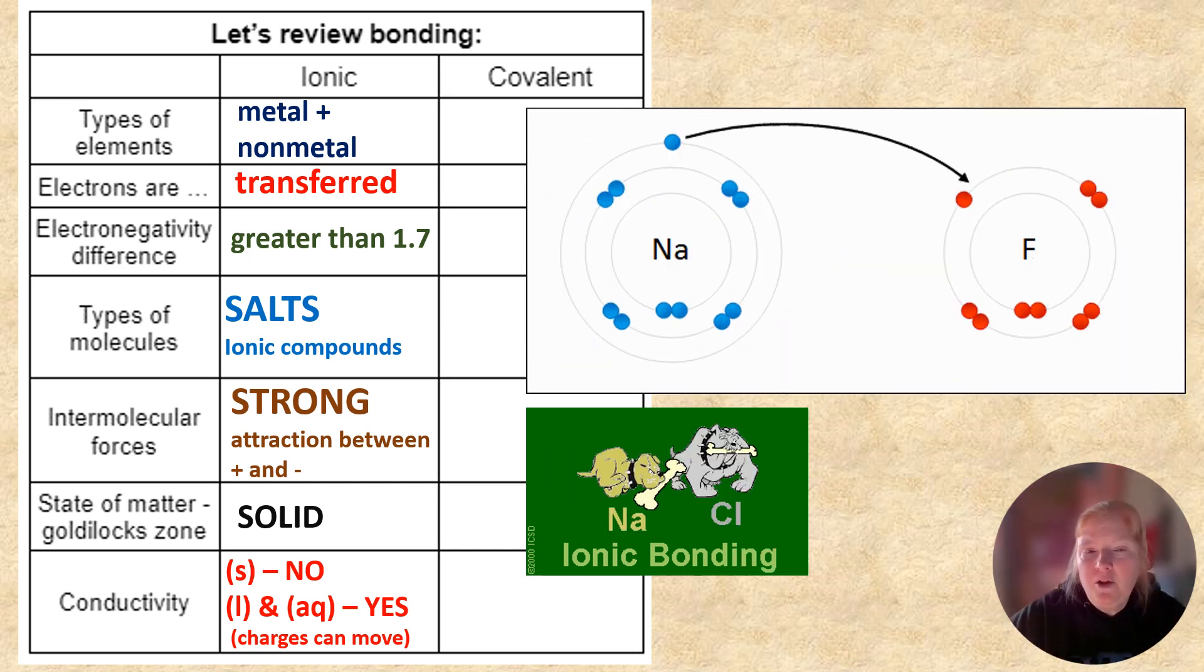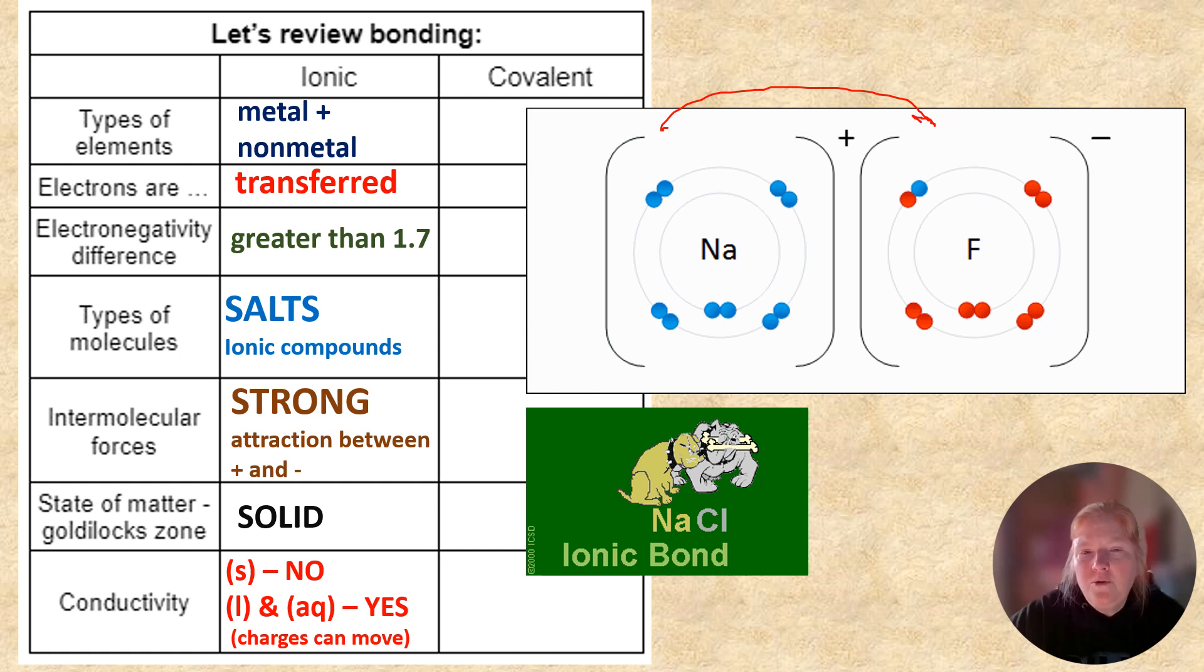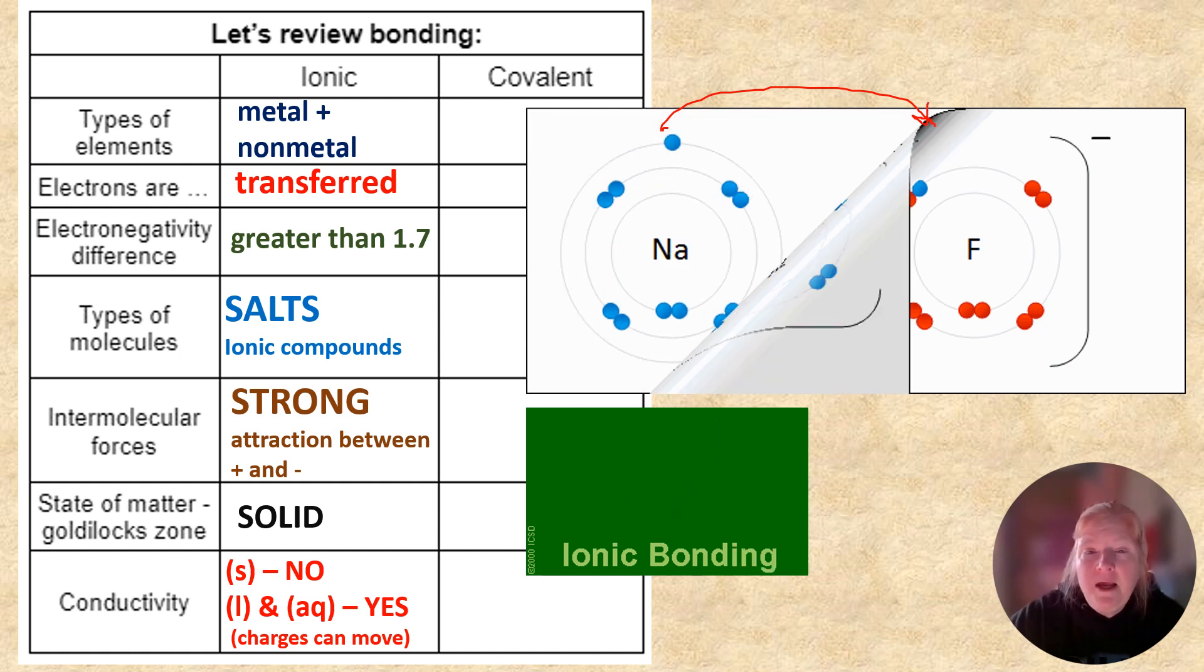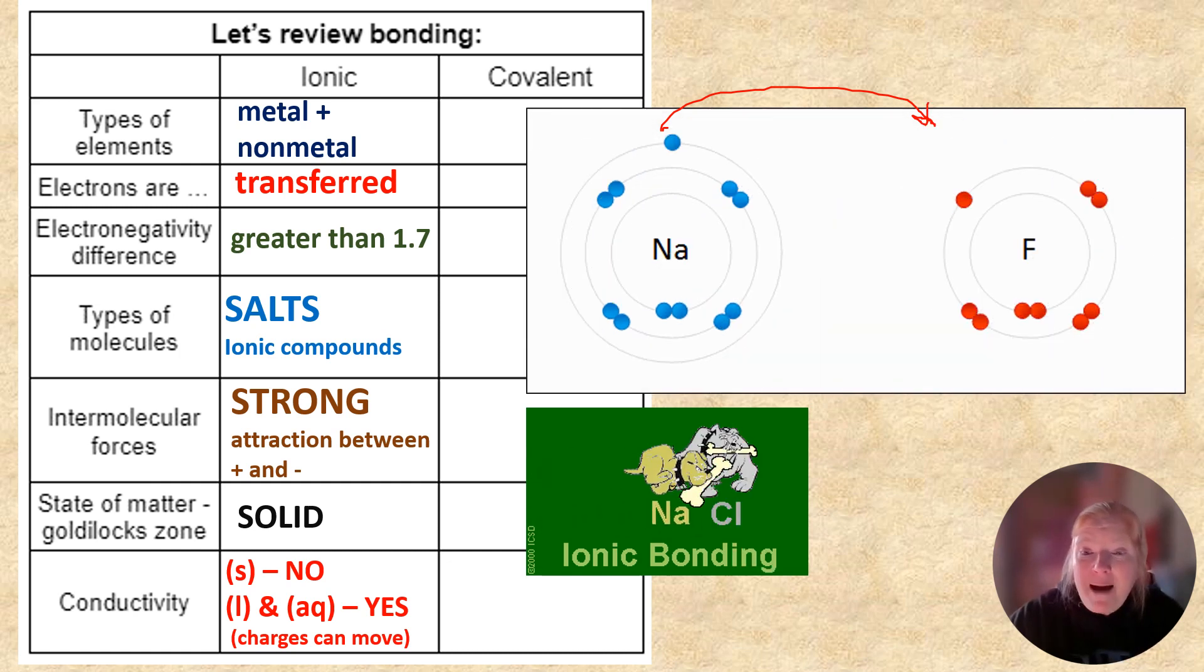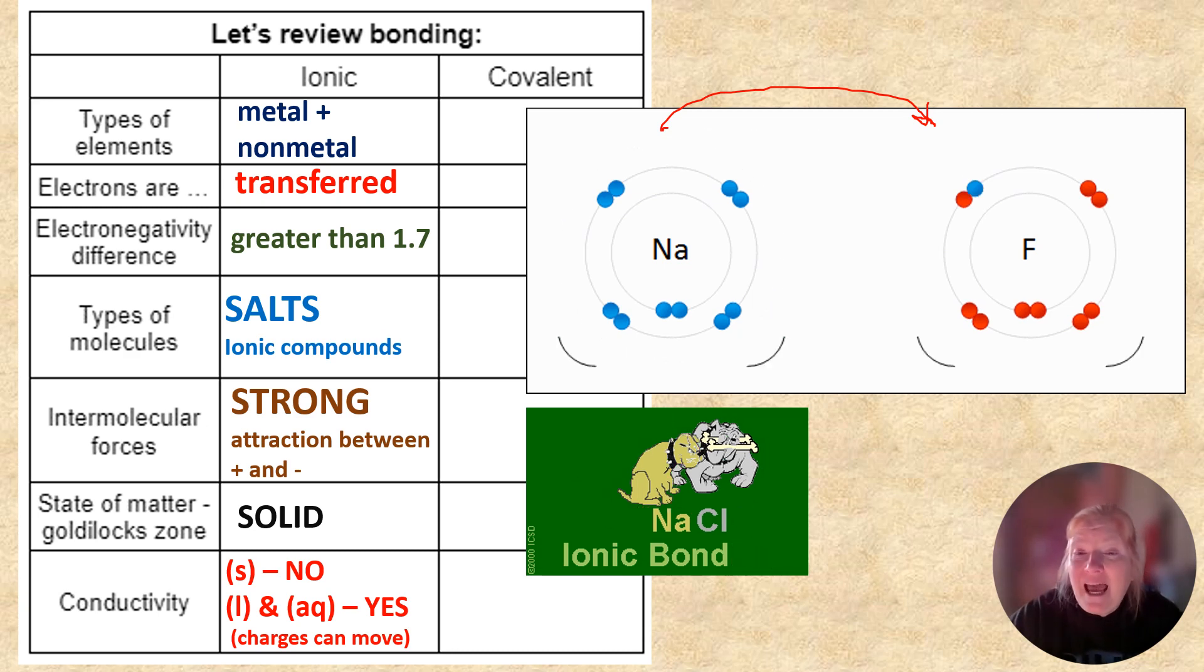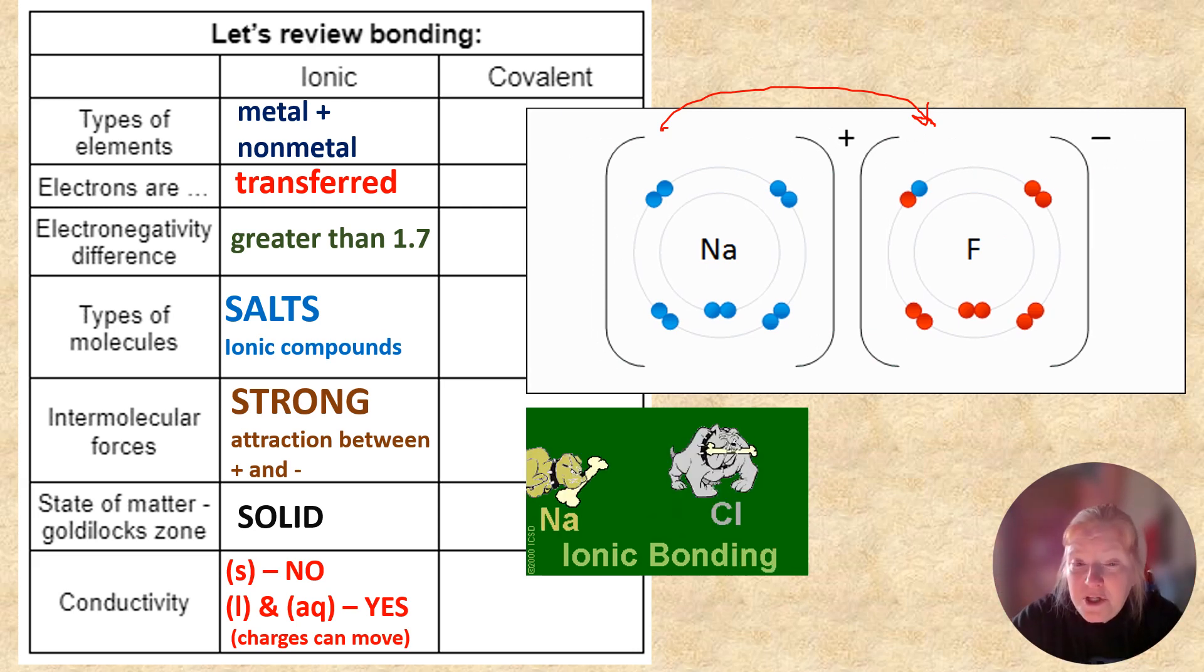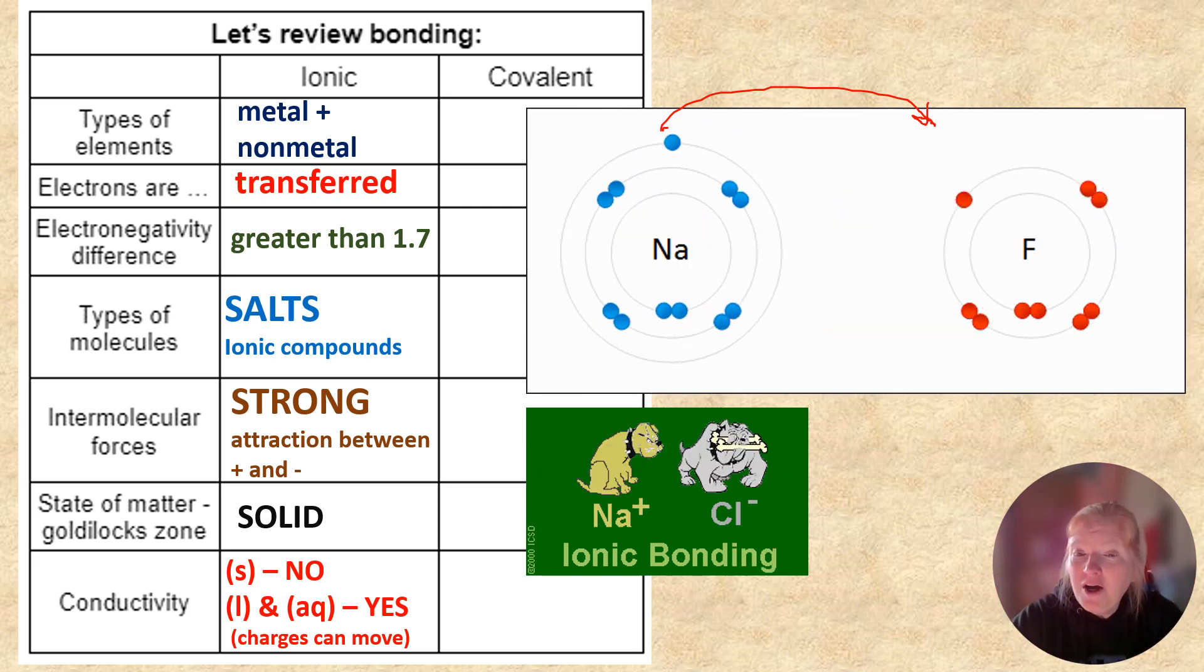So if we just take a quick minute and look at the GIF, you can see that Na is the metal and its electron leaves and goes right over to fluorine. Sodium forms a positive ion, a cation. Fluorine forms a negative fluoride ion. And then they are attracted to each other, those strong forces.